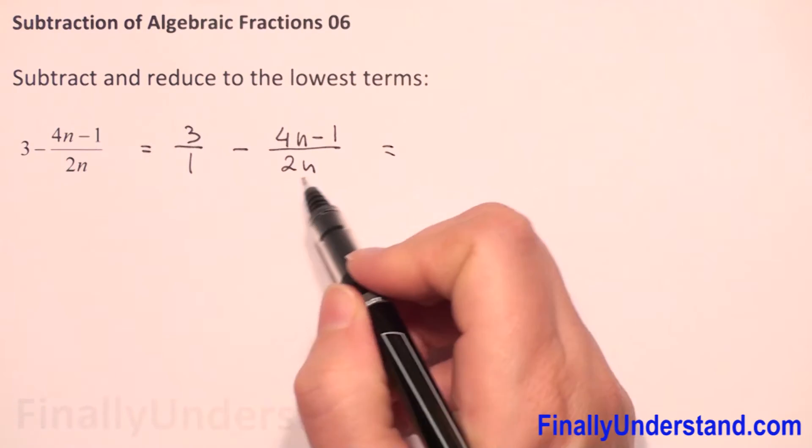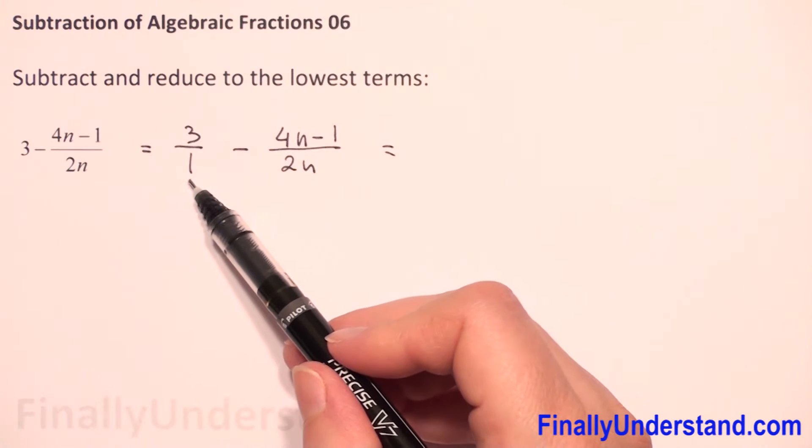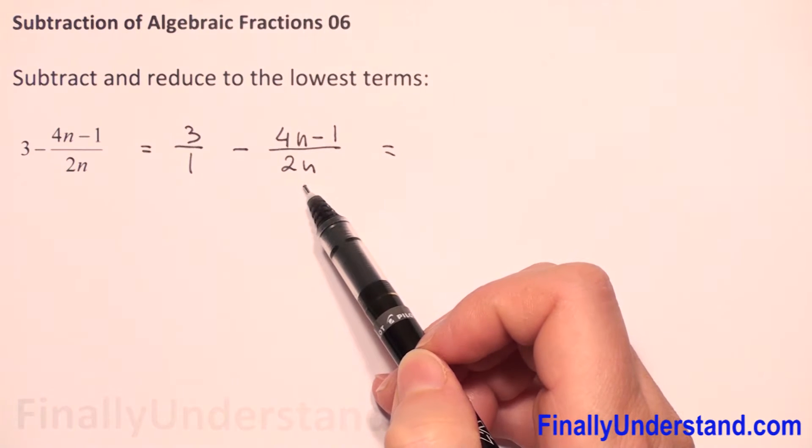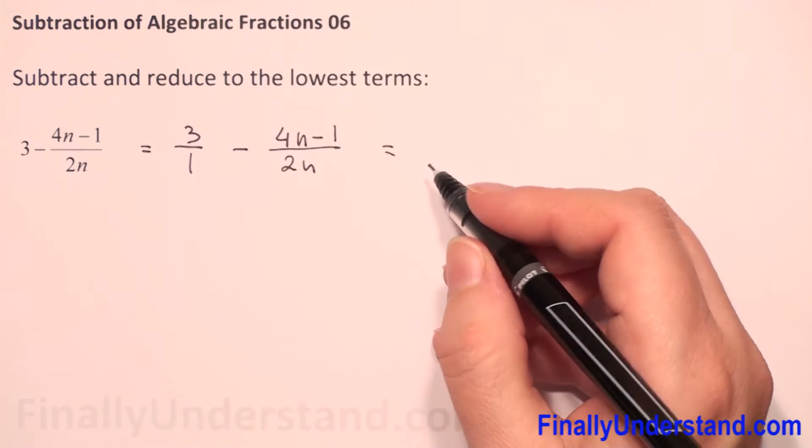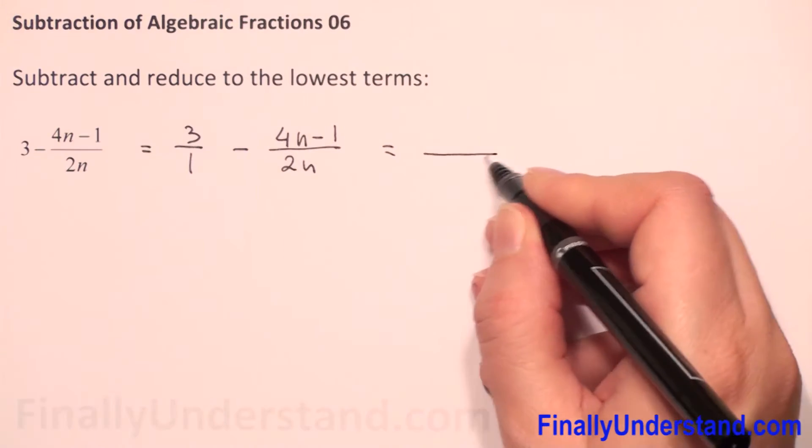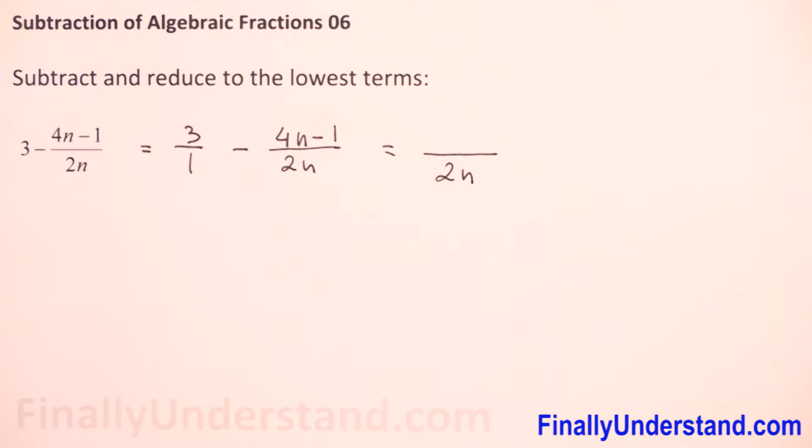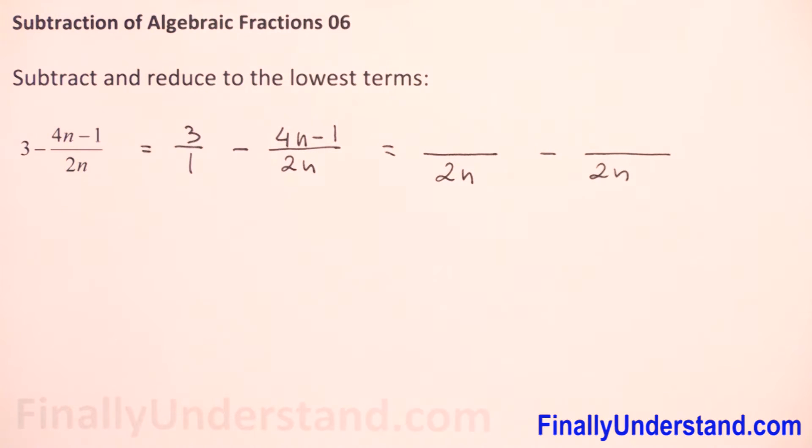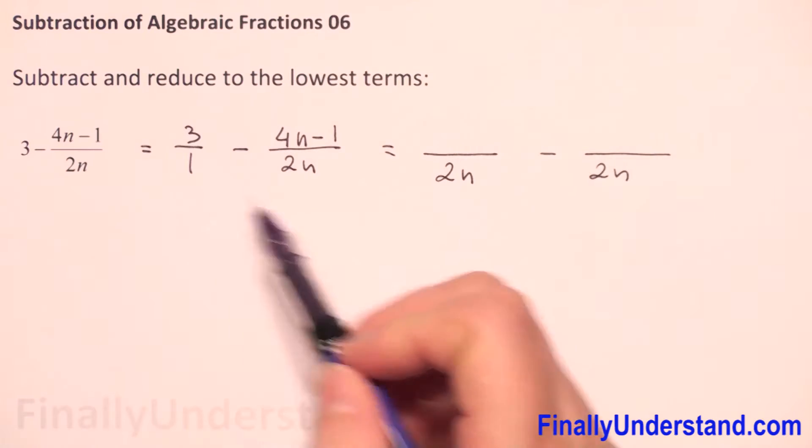Now when we have fractions, in the first denominator we have 1 and in the second 2n. So the least common denominator for 1 and 2n will be 2n. We see that the second denominator is the same, but the first we change to 2n.